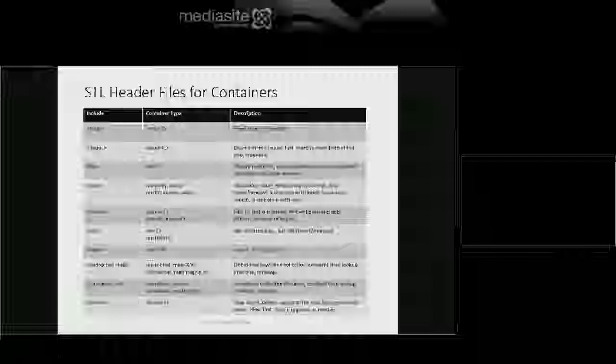Here are the header files for the containers. List is a doubly linked list with fast insert/erase at the current location or at either end, but slow traversal. In map, you get map and multi-map. In queue, you get queue and priority queue. In set, you get set and multi-set. In stack, you get stack. In unordered_map, you get unordered_map and unordered_multi_map.